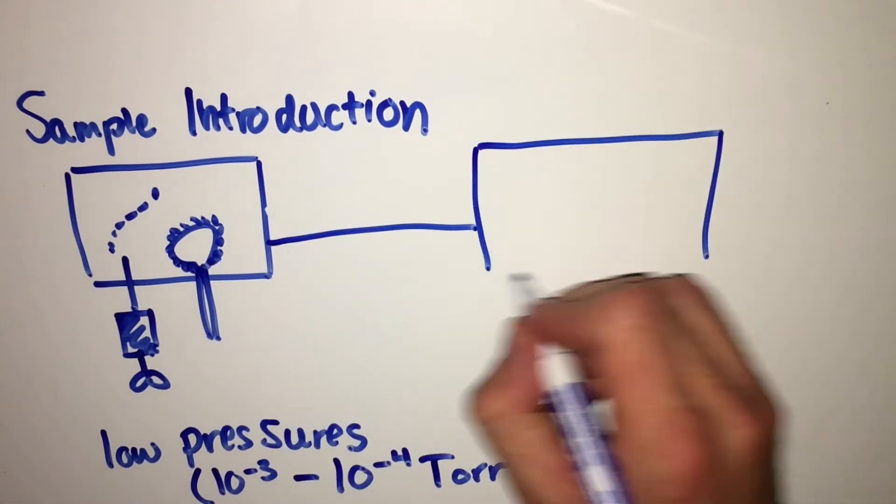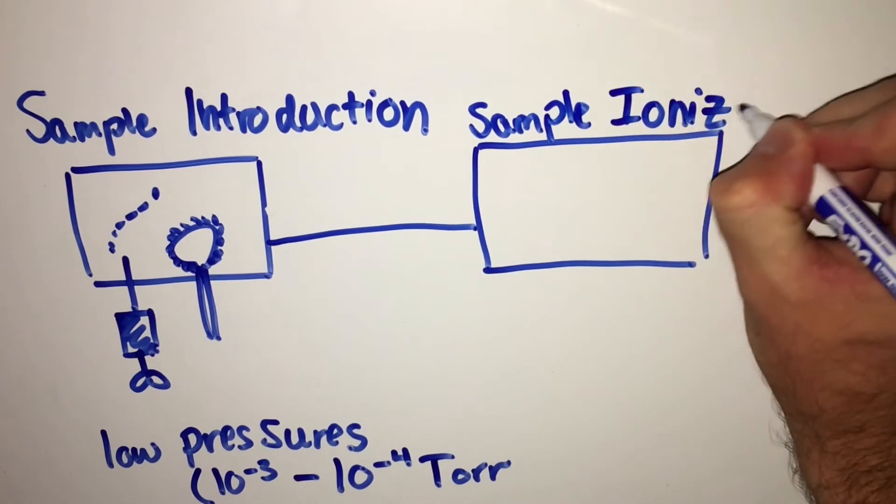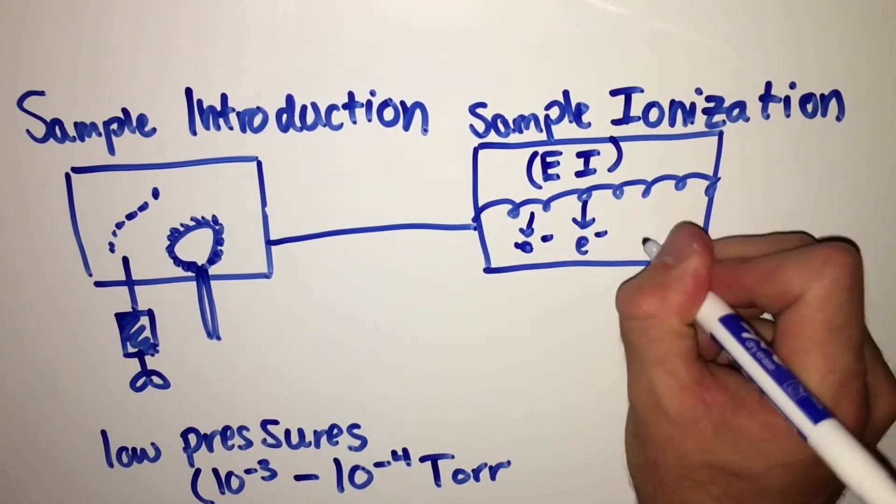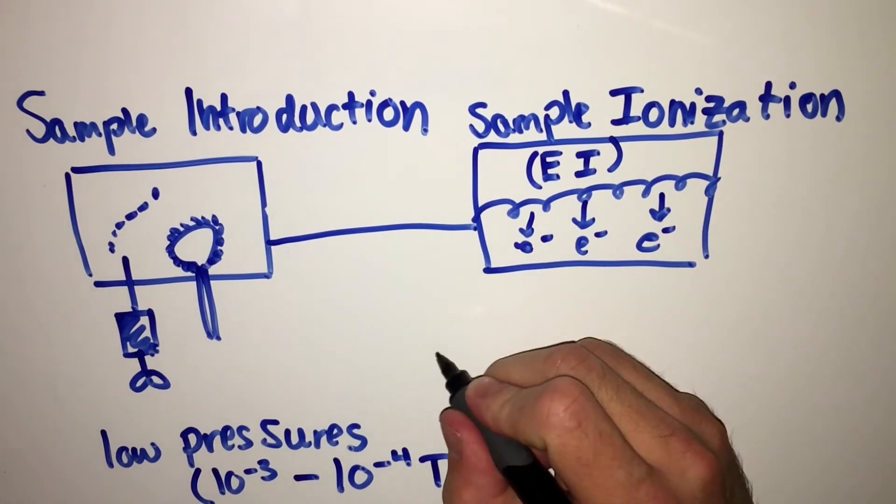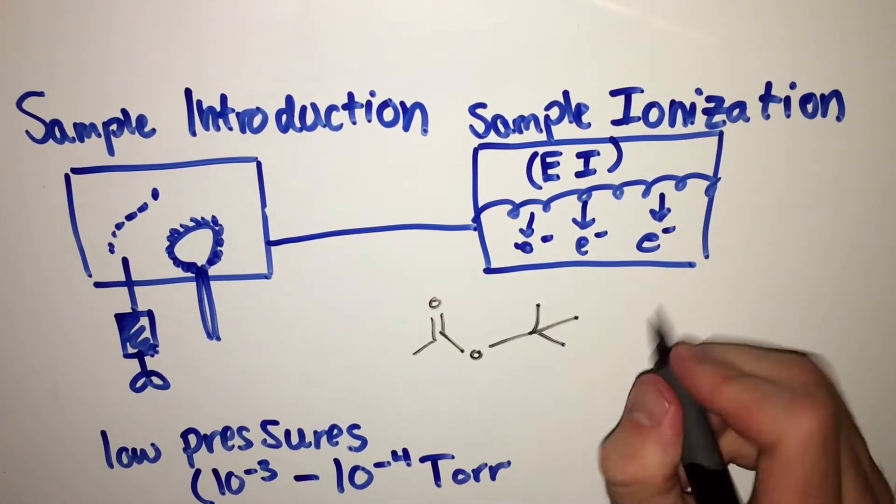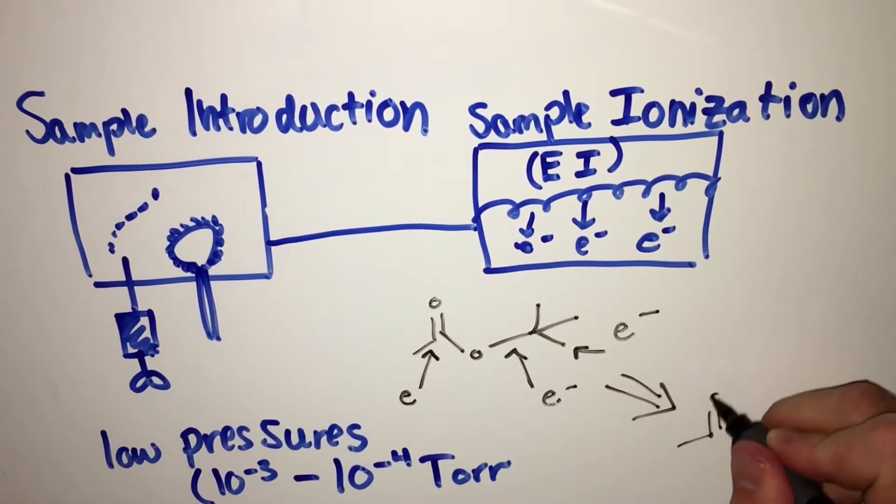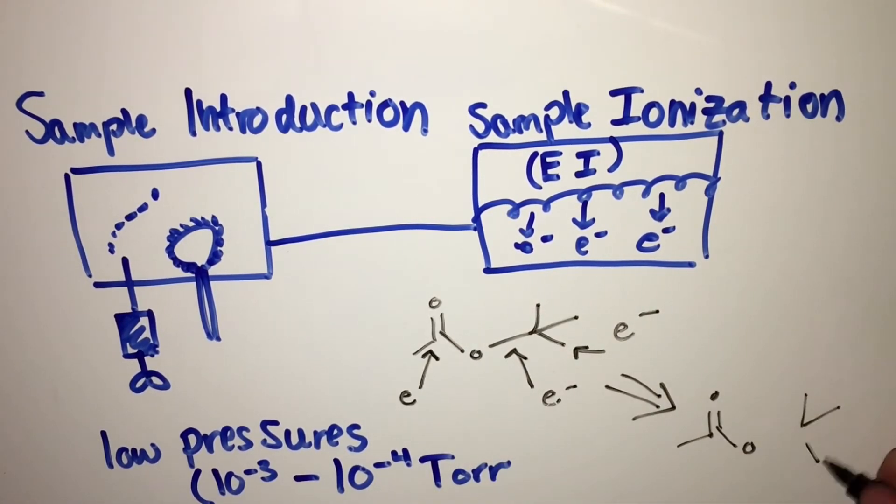Next, the sample must be ionized. A simple method of ionization is electron impact, otherwise known as EI. In EI, a current is passed through a wire which emits electrons that gain kinetic energies of up to 70 electron volts. The high-energy electrons collide with the molecule, effectively removing electrons from the molecule, breaking the bonds, and creating ion fragments.